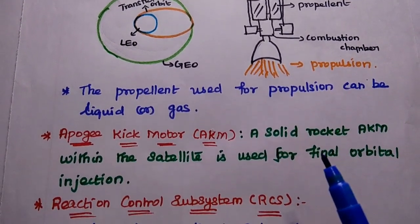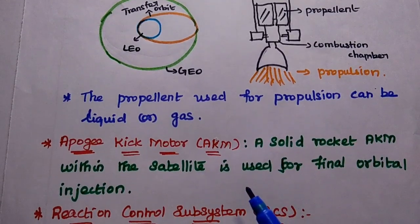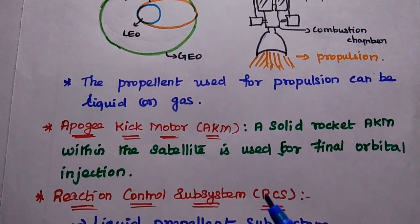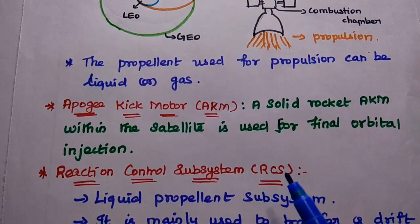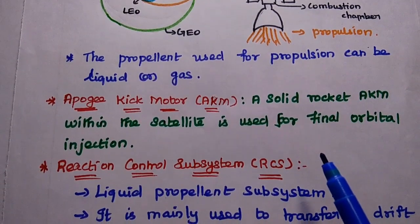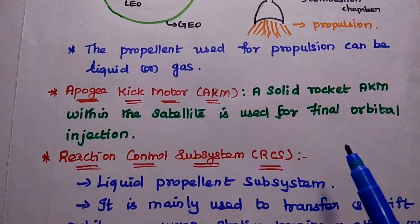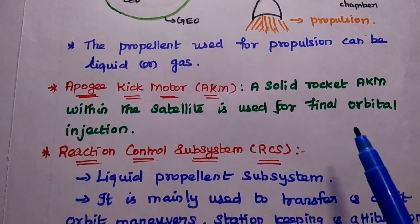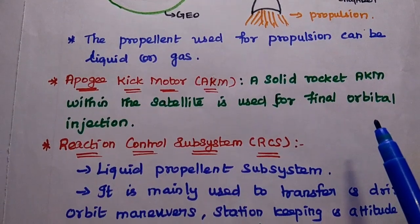A solid rocket called Apache kick motor, integrated within the satellite, is used for final orbital injection from the transfer orbit to geostationary orbit stage.